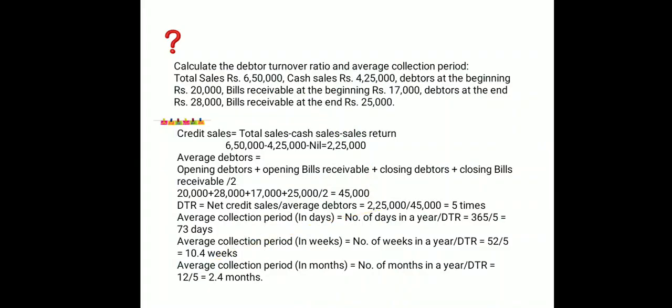The first question asks us to calculate the Debtors Turnover Ratio and Average Collection Period. The given information is: total sales rupees 6,50,000; cash sales rupees 4,25,000; debtors at the beginning rupees 20,000; bills receivable at the beginning rupees 17,000; debtors at the end rupees 28,000; and bills receivable at the end rupees 25,000. With this information we need to calculate DTR and average collection period.